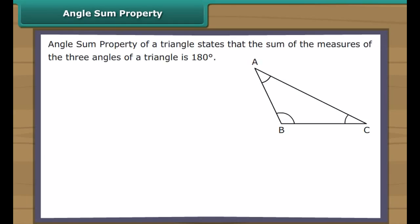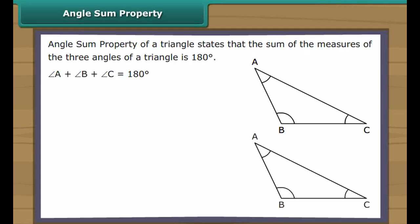Angle sum property of a triangle states that the sum of the measures of the three angles of a triangle is 180 degrees. In the figure, angle A plus angle B plus angle C is equal to 180 degrees. Let us now prove the angle sum property of a triangle.